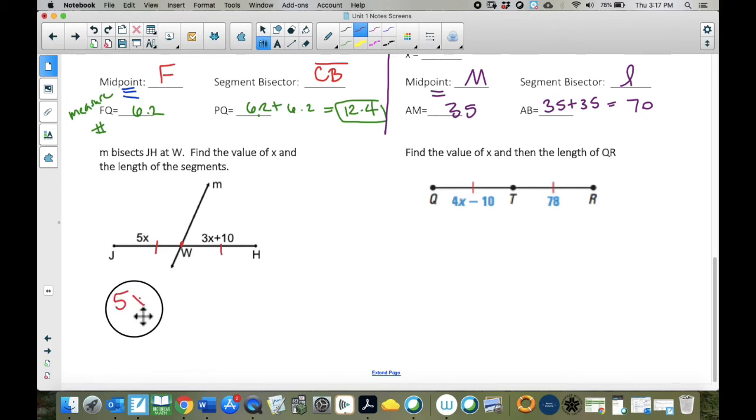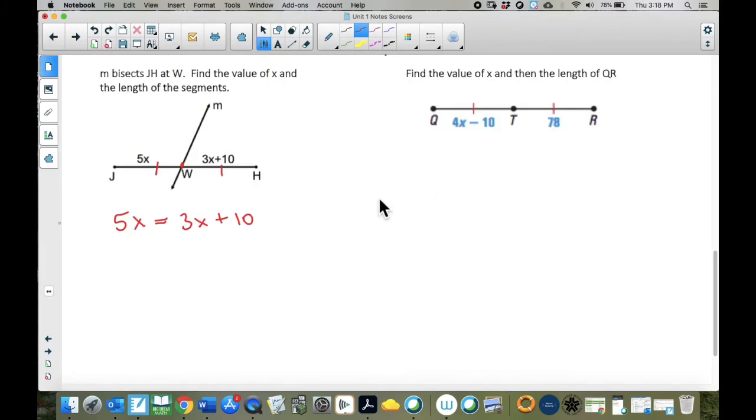Find the value of X and the length of the segments. If it bisects, which it says it does, that means this piece is congruent to this piece. So I put those hash marks on there. That means that 5X is equal to 3X plus 10. And so now we can solve that equation. We need to subtract that 3X from both sides. We get 2X equals 10. We divide by 2, and we get our answer of X equals 5.